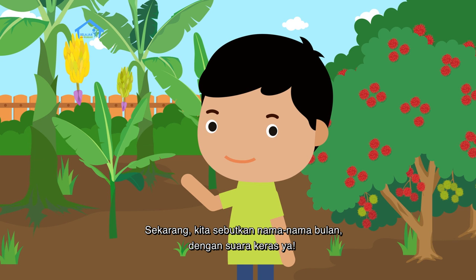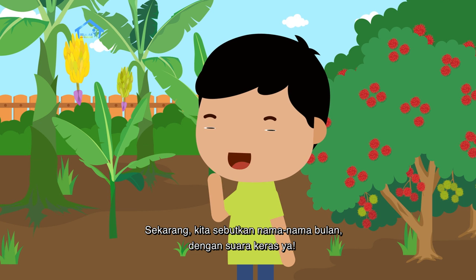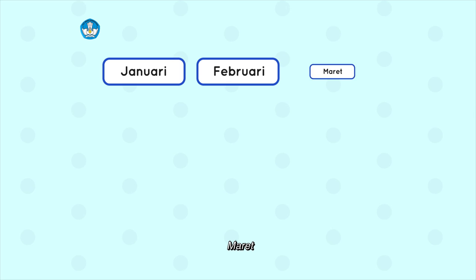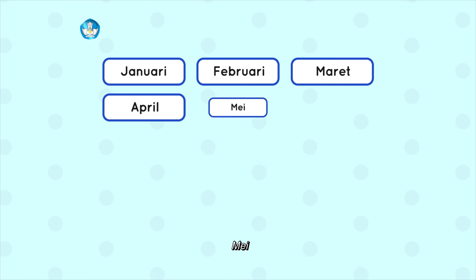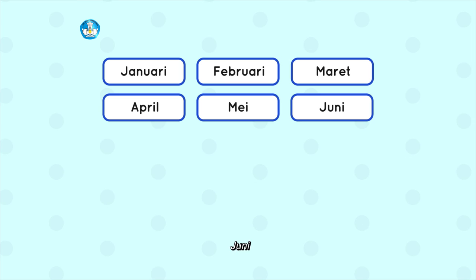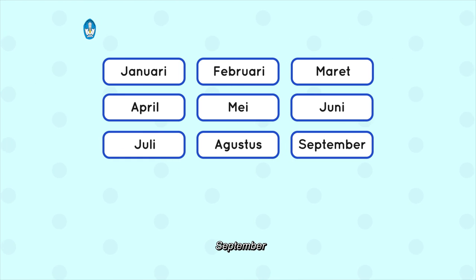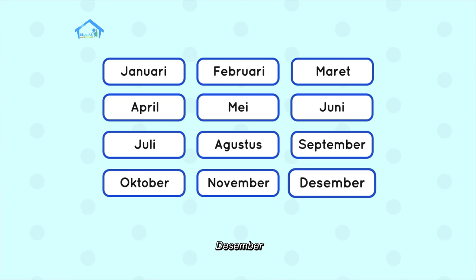Sekarang kita sebutkan nama-nama bulan. Dengan suara keras ya. Januari, Februari, Maret, April, Mei, Juni, Juli, Agustus, September, Oktober, November, Desember.